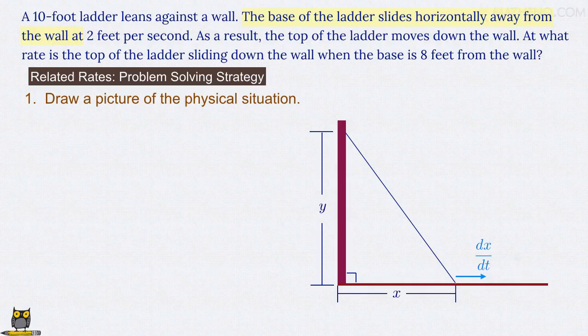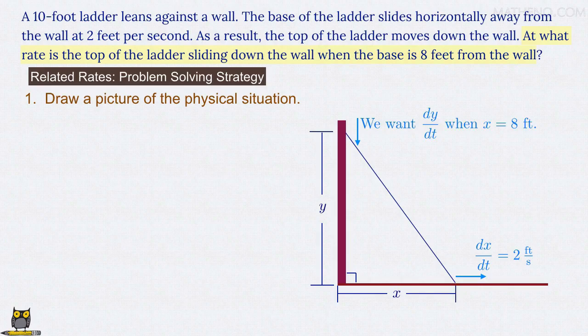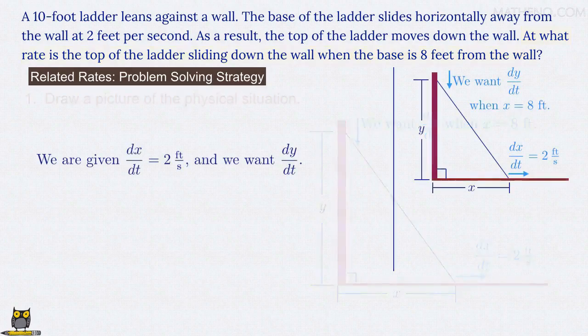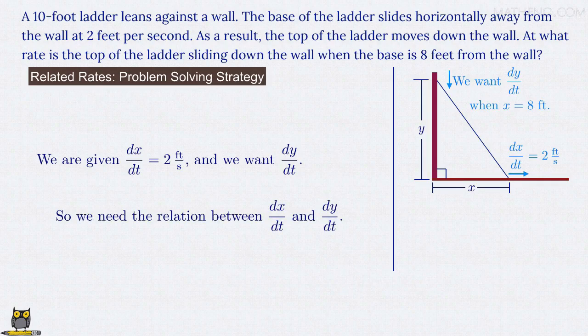We're told that that rate is 2 feet per second. The problem then asks us to find the rate at which the ladder's top moves down the wall, and so we want the rate dy/dt, the rate at which y varies with respect to time t. Specifically, we have to find the rate at the instant when x equals 8, and the base is 8 feet from the wall. So we're given dx/dt equals 2 feet per second, and we're asked to find the value of dy/dt.